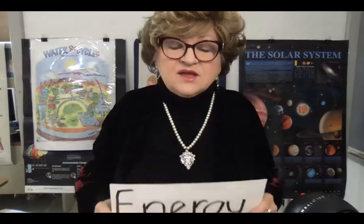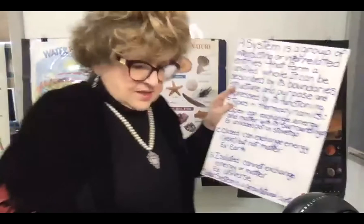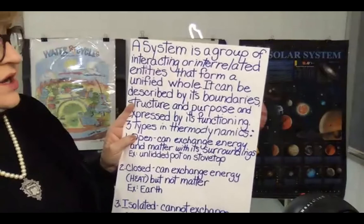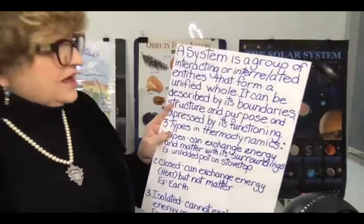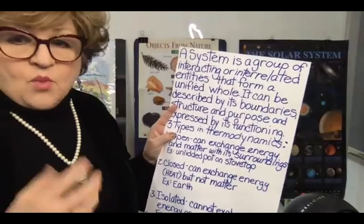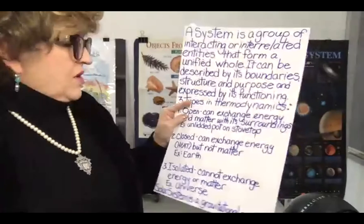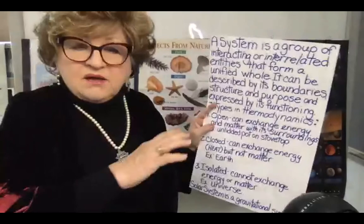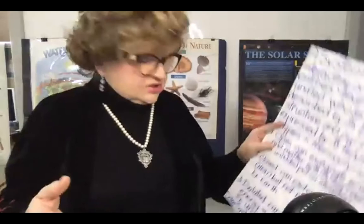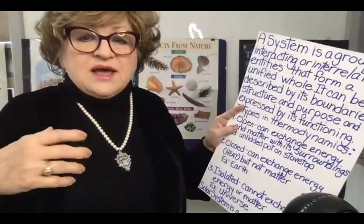A system is a group of interacting or interrelated entities that form a unified whole — a group of things that form one thing. It can be described by its boundaries, structure, purpose, and functioning. In the law of thermodynamics there are three types: open, closed, and isolated. An open system allows exchange of energy and matter. An example is the human body — we receive food, nutrients, water, and oxygen, and give off carbon dioxide, liquid and solid waste, water vapor, sweat, and heat.